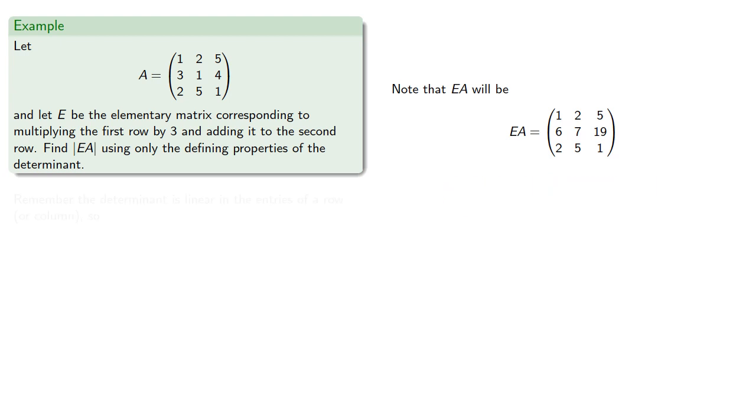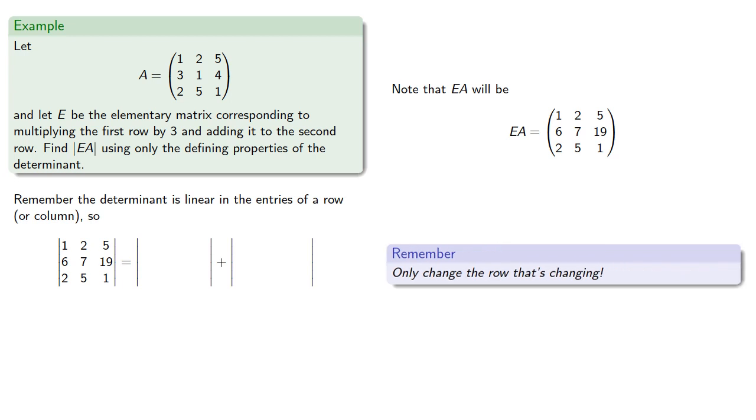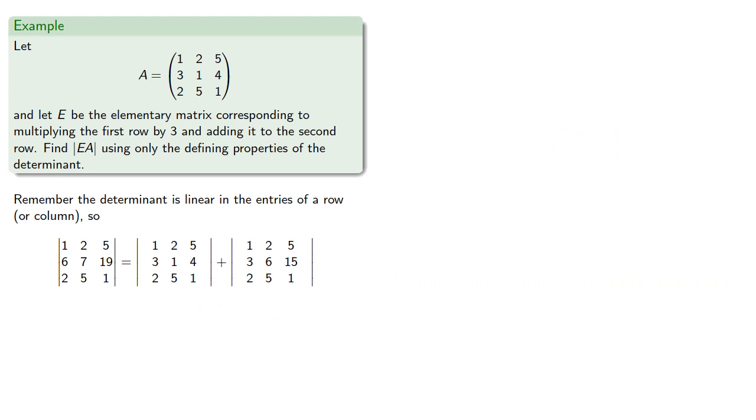Now, remember the determinant is linear in the entries of a row or column, and so our determinant of EA can be expressed as the sum of two determinants. But which ones? The key here is only change the row that's changing. And since the second row was the one that changed, we'll keep the first and third rows the same. And since we'd like to relate the determinant back to the determinant of A, we'll make our first matrix A itself, which means the second row of the other matrix must be...